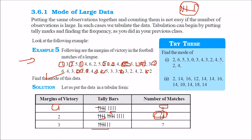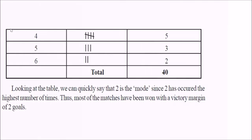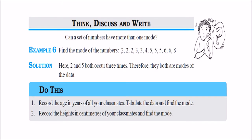Can a set of numbers have more than one mode? Yes. For example, in the given data: 2 occurs 3 times, 3 occurs 2 times, 4 occurs 1 time, 5 occurs 3 times, 6 occurs 2 times, 8 occurs 1 time. Both 2 and 5 occur 3 times — the highest frequency. So this observation is multimodal, having 2 modes: 2 and 5.